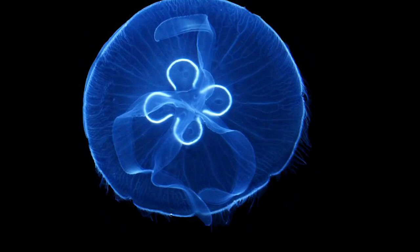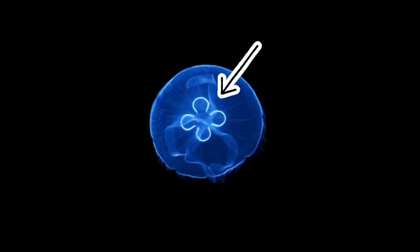The tentacles are used to catch plankton — it feeds on plankton. Sometimes it uses the mucus, the sticky part of the bell, to slide food down into its mouth. The sexual organs of the moon jellyfish are shown through the translucent bell and appear as four circular shapes. Those four structures are the sexual organs and are how the jellyfish reproduces.